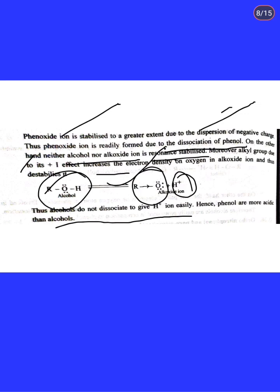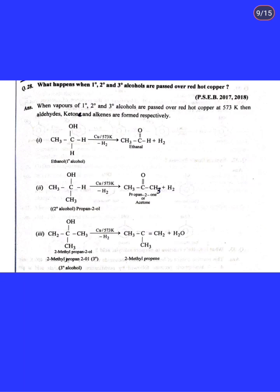When primary, secondary, and tertiary alcohols are passed over red hot copper at 573 K: primary alcohol gives aldehyde with evolution of H2; secondary alcohol gives ketone with evolution of H2; tertiary alcohol undergoes dehydration to give alkene as the major product, not aldehyde or ketone. This is the oxidation behavior of primary, secondary, and tertiary alcohols over red hot copper.